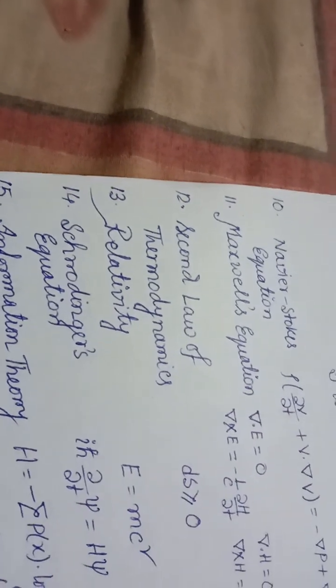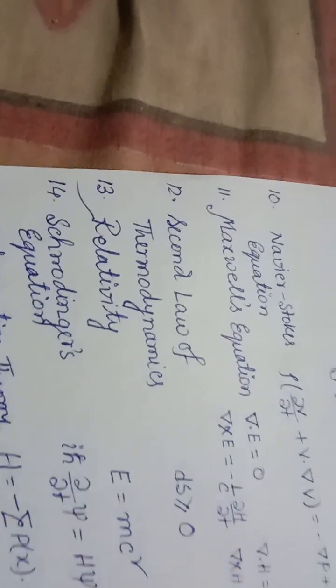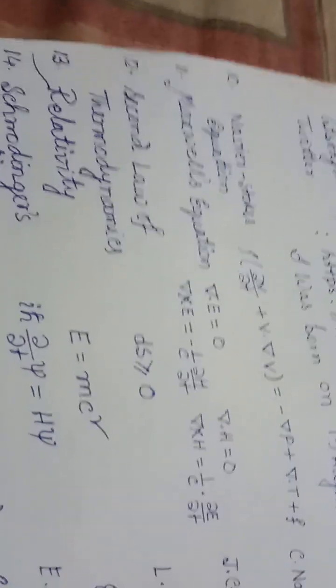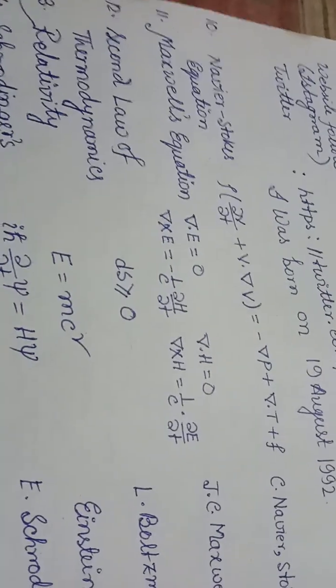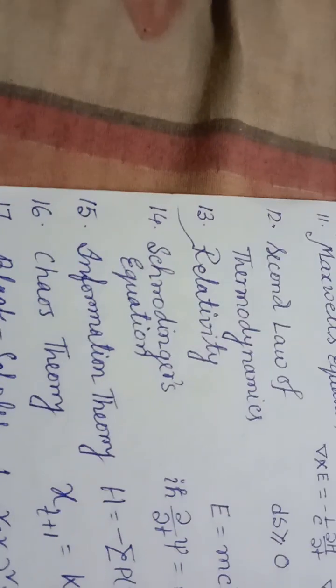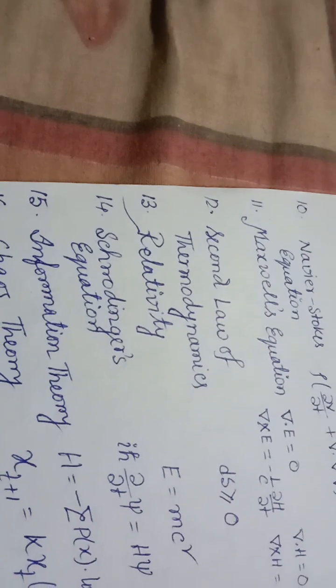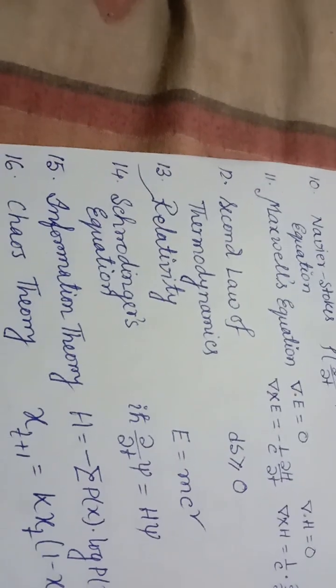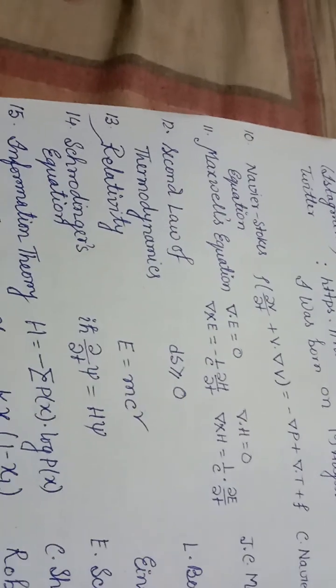Formula number 12, second law of thermodynamics: dS ≥ 0. L. Boltzmann, 1874. Formula number 13, relativity: E = mc². Einstein, 1905.